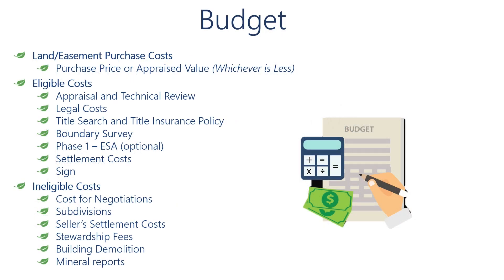The first expense is the land or easement purchase cost. The land purchase cost indicated on the budget for an acquisition grant is either the appraised value or the purchase price, whichever is less. For instance, if your parcel is appraised for $100,000 but your sales agreement is for $110,000, the land purchase cost on your application budget should reflect the $100,000 appraised value.